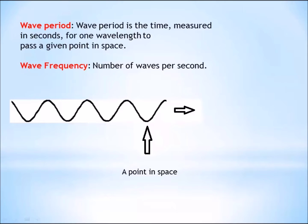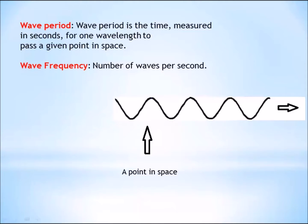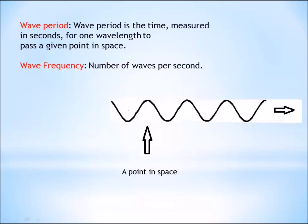Look at the wave I've drawn right here. I can make this wave move from left to right. When that wave moves from left to right you see several things happen. First of all, the time it takes the wave to move from left to right is two seconds. The second thing that you notice is that during that time, two and a half wavelengths move past that point in space — the arrow. So we have a time of two seconds and we have 2.5 waves.